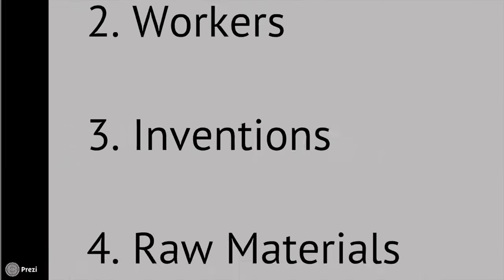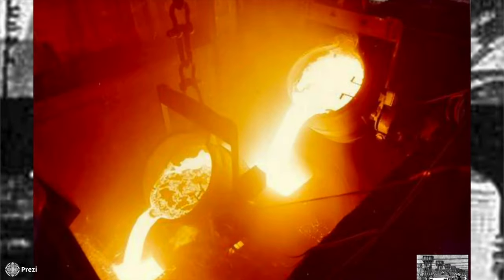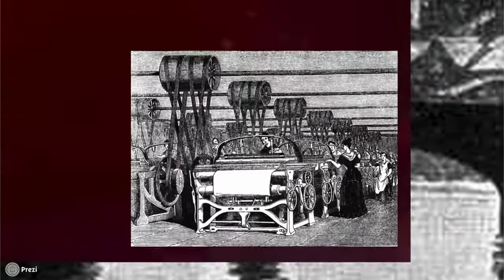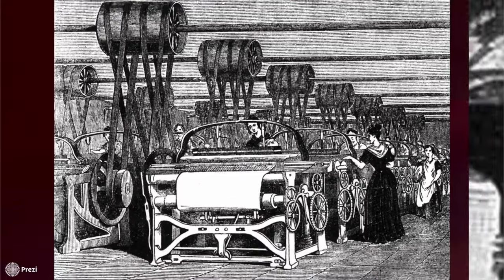That brings us to reason number three: the inventions. We already talked about the seed drill, but there were other things that came out, like the steam engine, the Bessemer process — which could be used to make steel — and the textile mills. What's interesting about England is it was a place that embraced science. The Scientific Revolution had come out many years before. England was a place with a lot of universities and educated people. So these new technologies started hitting fast and furious, and new industries are created.